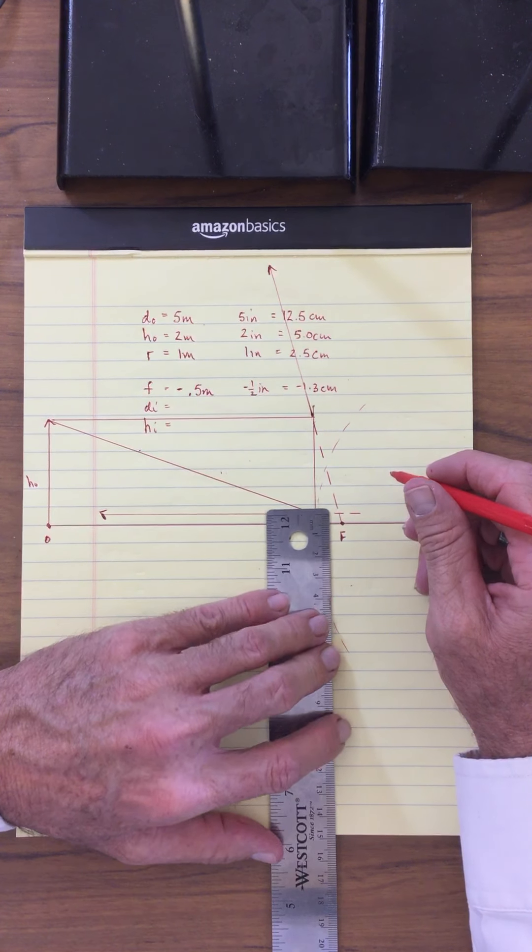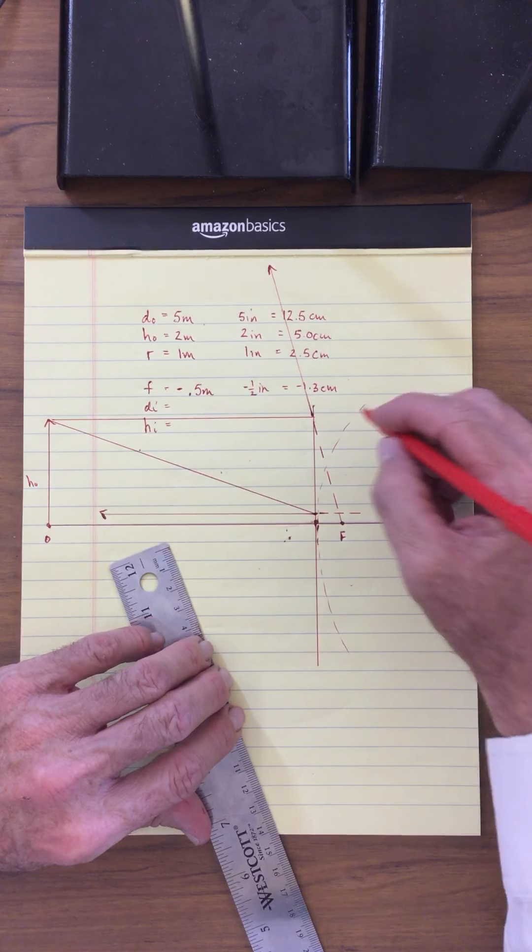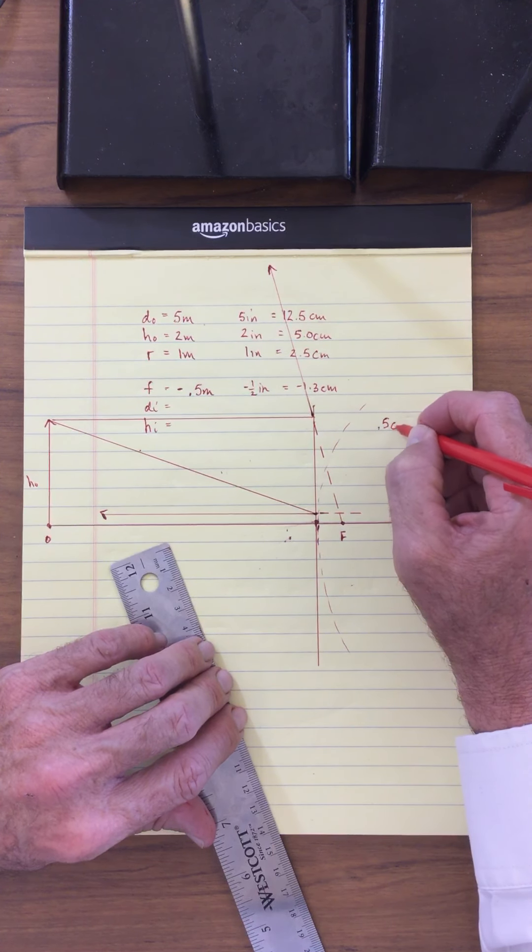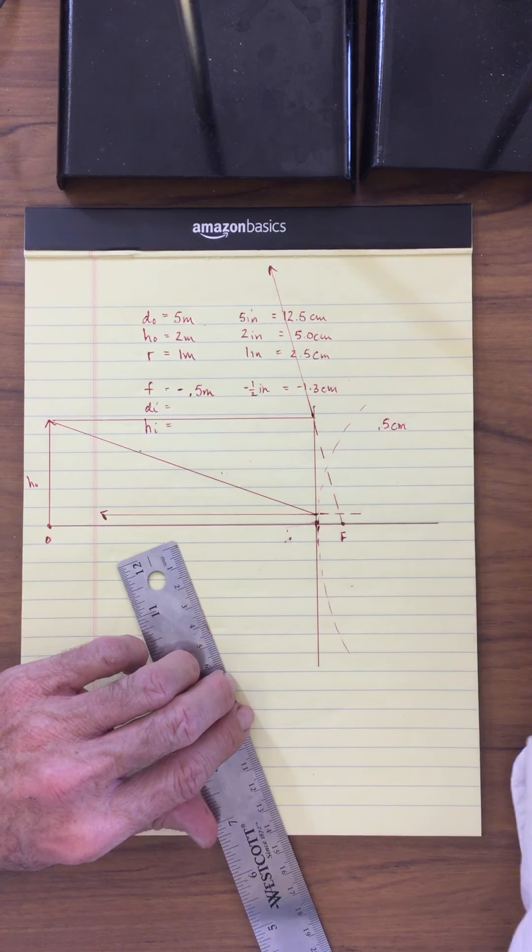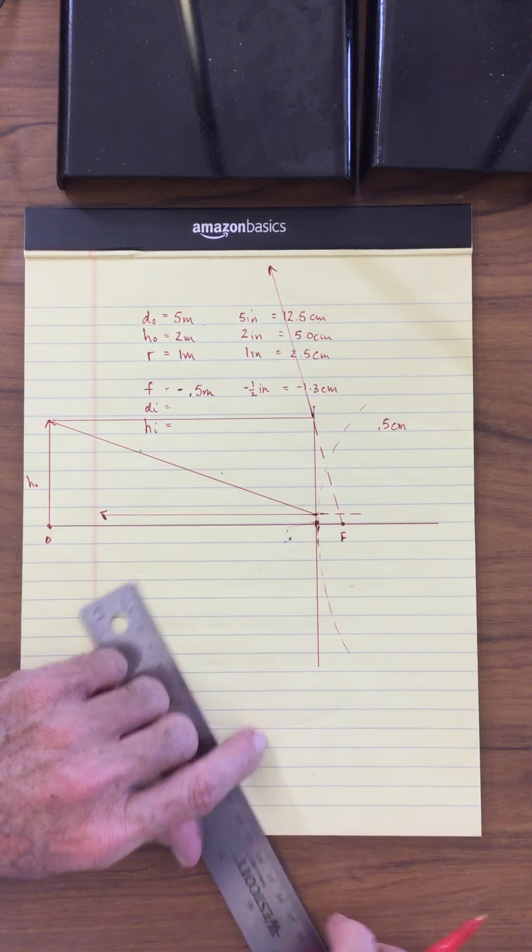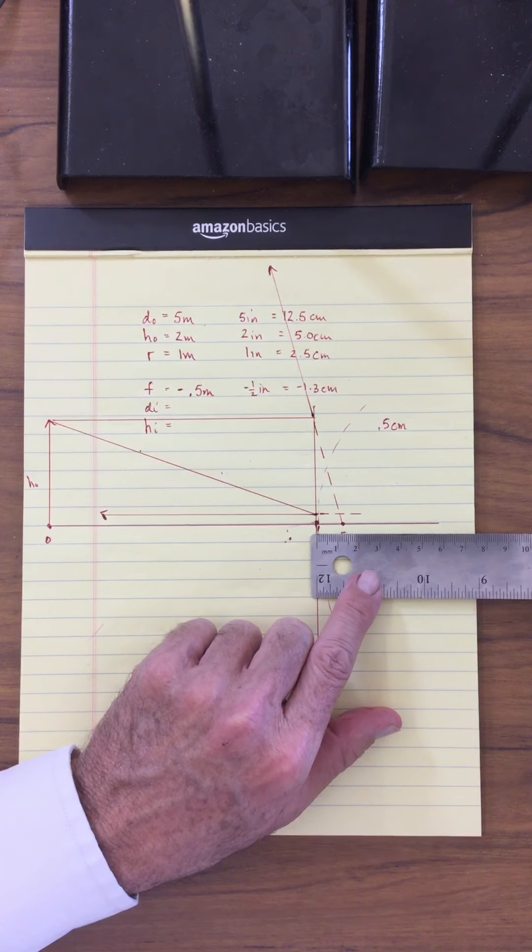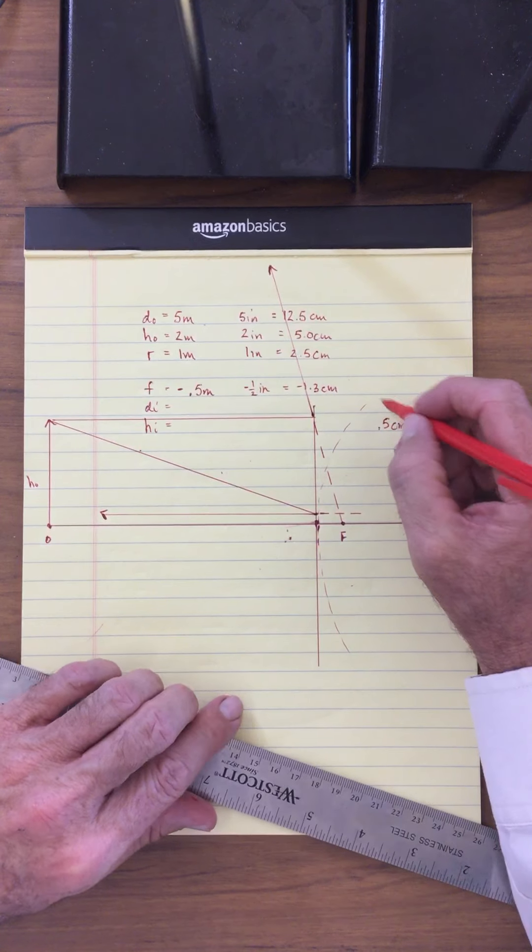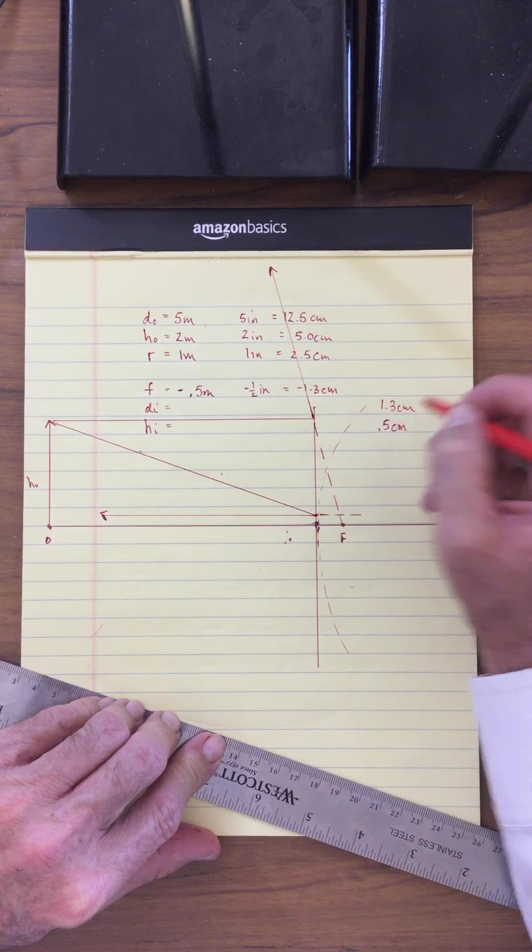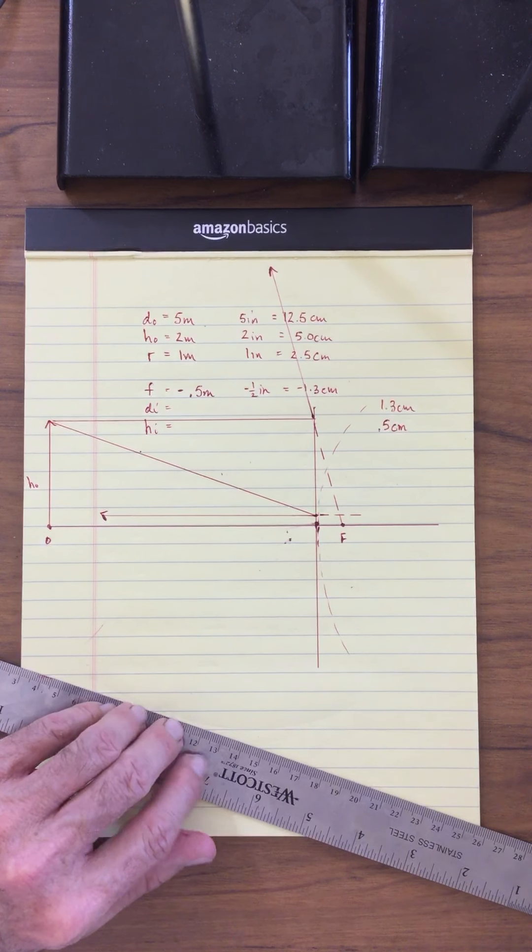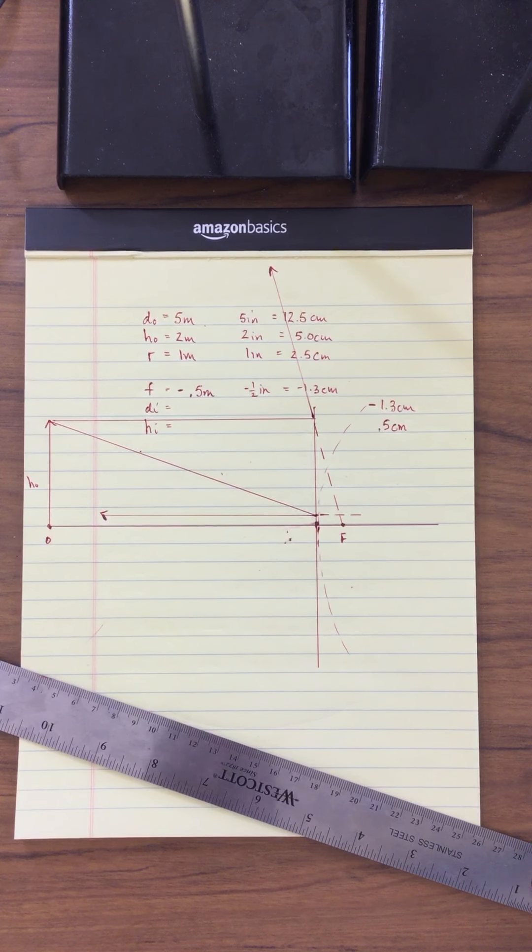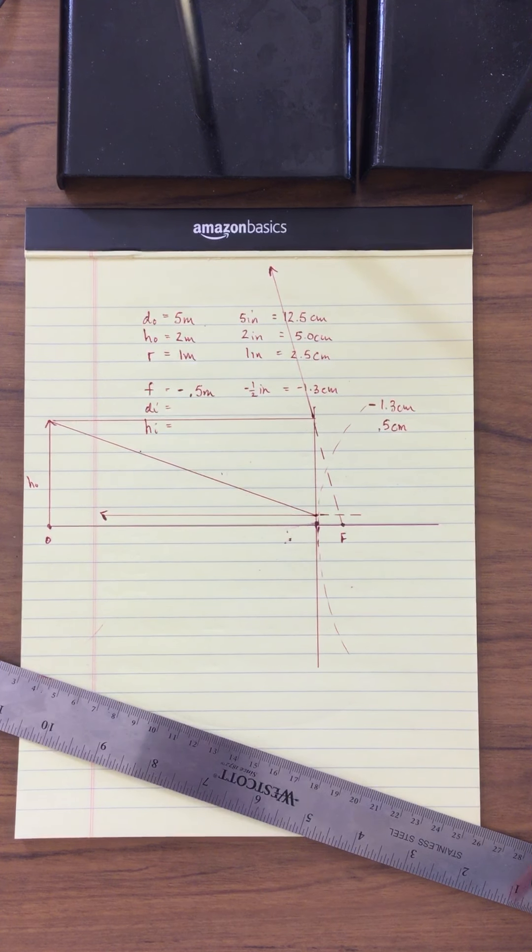Okay, so this is going to be about a half of a centimeter. So that's going to be the height of my image, which is 0.5 centimeters. We'll have to do some calculations for that. And the distance is going to be about 1.3 centimeters. Remember, the distance is negative, but my height is going to be positive. I'm going to do some calculations, and we'll be back for the next part.